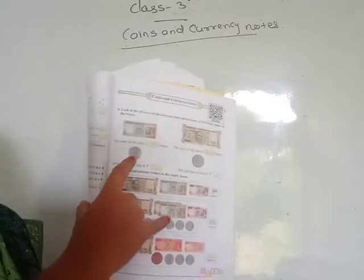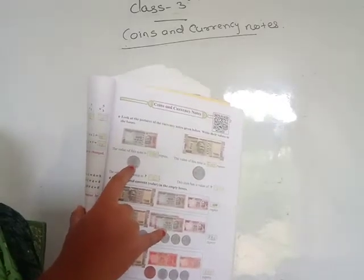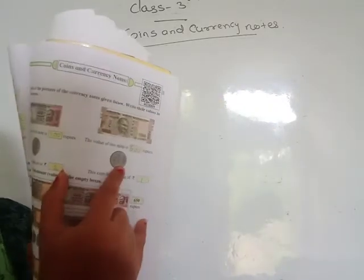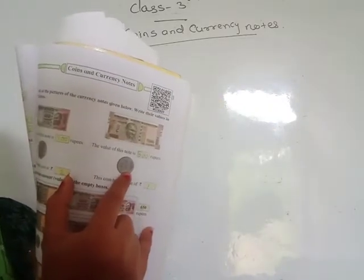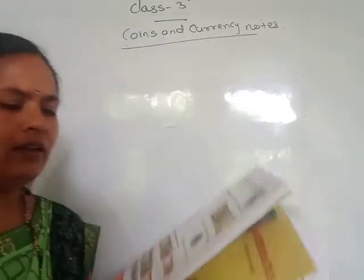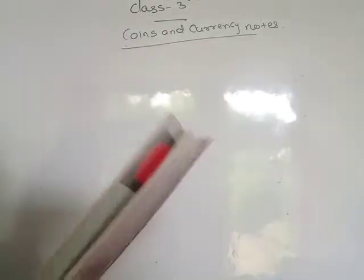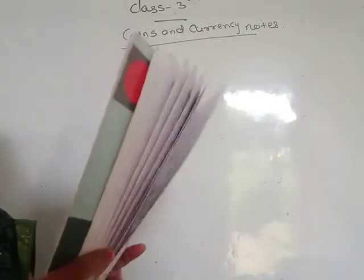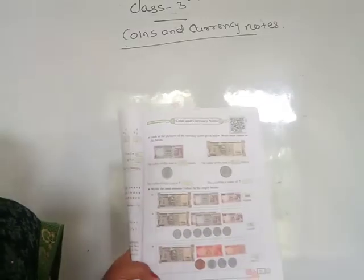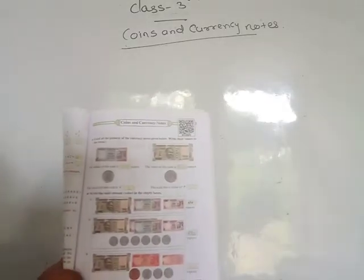Then the value of this coin — you see this coin — 2 rupees coin, and the value of this coin is 1 rupee. Then one question is given: write the total amount in the empty boxes.